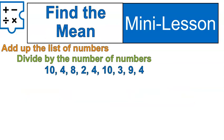I want you to try it out with this list of numbers here. Find the mean of this list of numbers. Add up the numbers and divide by the number of numbers. Try it out. Go.